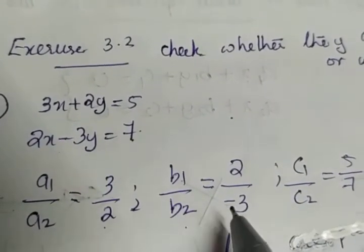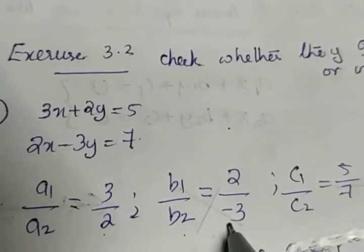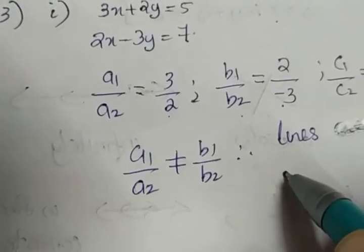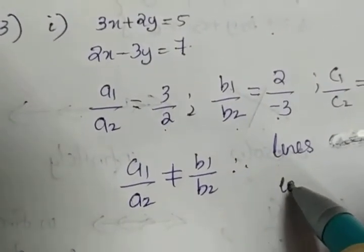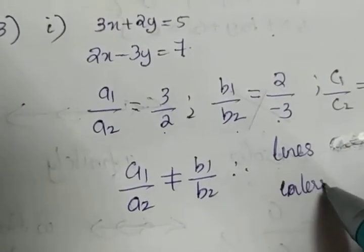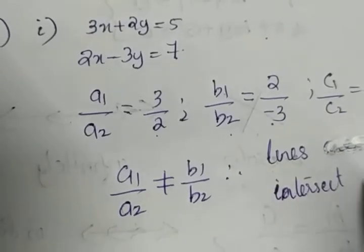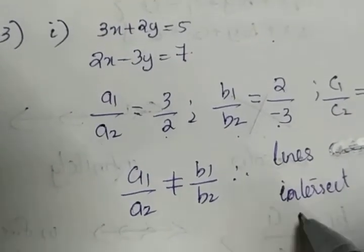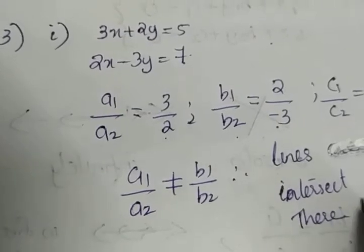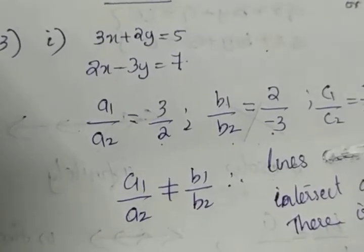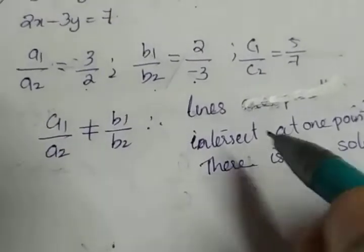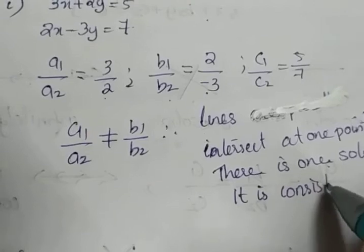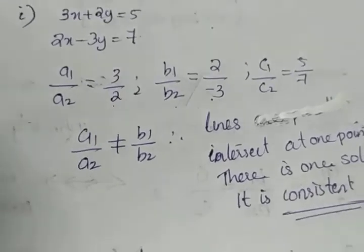It is clear that a1 by a2 is not equal to b1 by b2. Since a1 by a2 is not equal to b1 by b2, we can say that the lines intersect at one point. There is one solution, and what about the consistency? Since it has a solution, we can come to the conclusion that it is consistent.